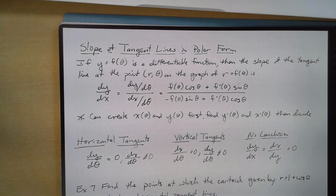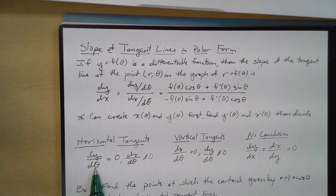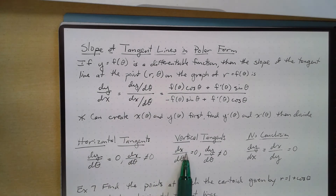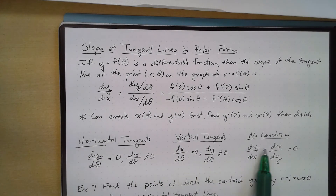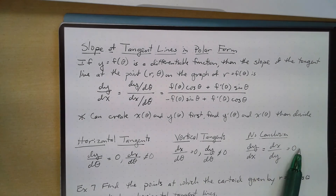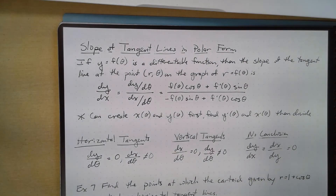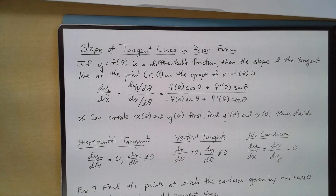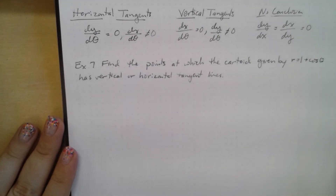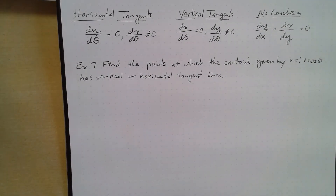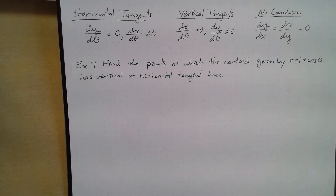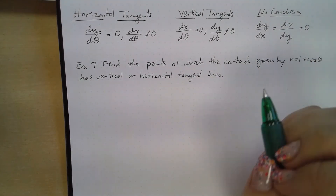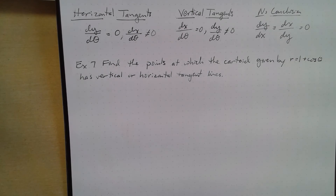To find horizontal and vertical tangents: for horizontal tangents, set dy/dθ = 0; for vertical tangents, set dx/dθ = 0. If both equal zero simultaneously, we have no conclusion. Let's apply this to find where the cardioid r = 1 + cos(θ) has vertical or horizontal tangent lines.